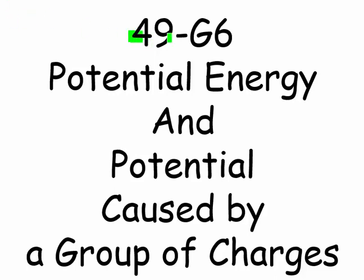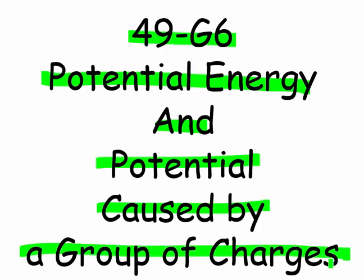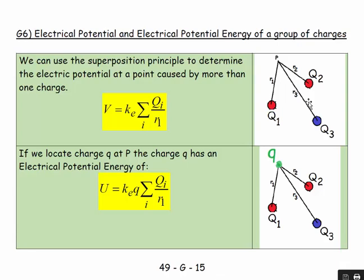Welcome, this is 49-G-6: potential energy and potential caused by a group of charges. Here's our visualization: we have a group of charges, say Q1 and Q2 are positive, and Q3 is negative. Each one has its own distance to the point of interest.